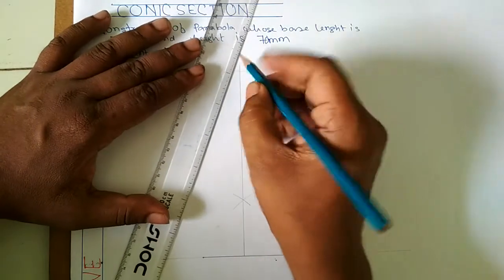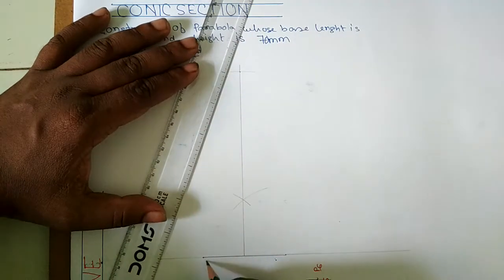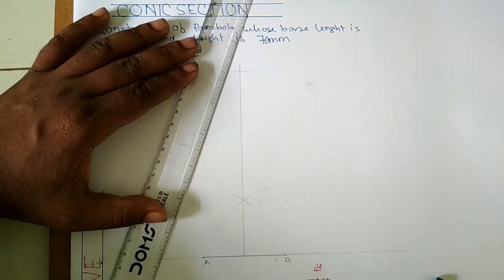Now we will join the base point with C. Suppose the end points are A and B.